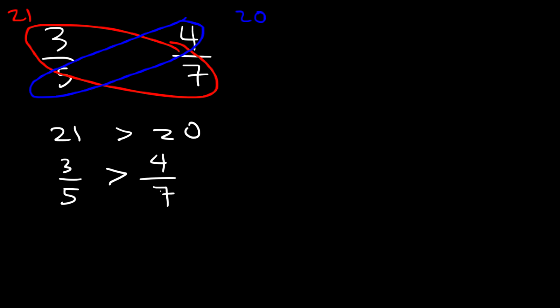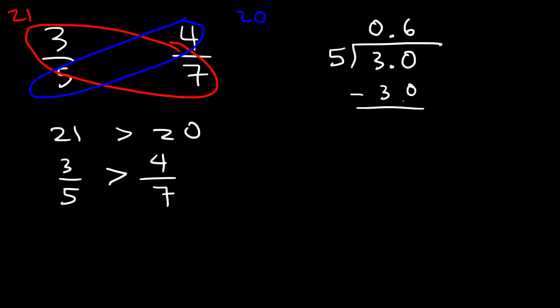Now let's confirm it by converting each fraction into a decimal. If you don't have a calculator, you can use long division. For 3 over 5: put the 5 on the outside and the 3 on the inside. 5 goes into 3 zero times, so add a decimal and a 0 — treat 3.0 as 30. 5 goes into 30 six times exactly, with 0 remaining. So 3 over 5 is 0.6 as a decimal.